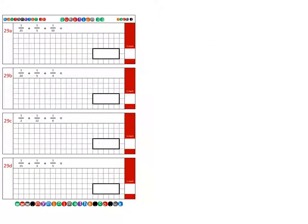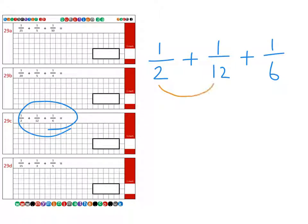Next, we're going to look at question 29C. And this question is 1/2 add 1/12 add 1/6. And again, if we look at the denominators, we know that the 2 will fit into the 12 and the 6 will also fit into the 12. So 12 will become our new common denominator, which we're going to add together.